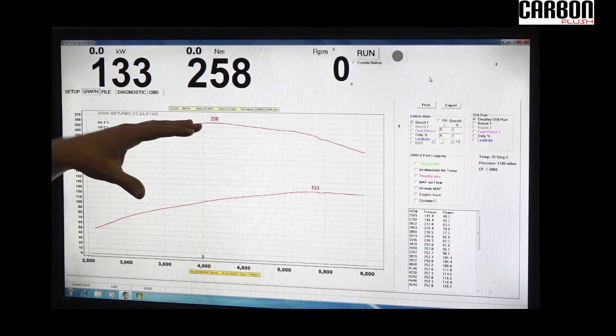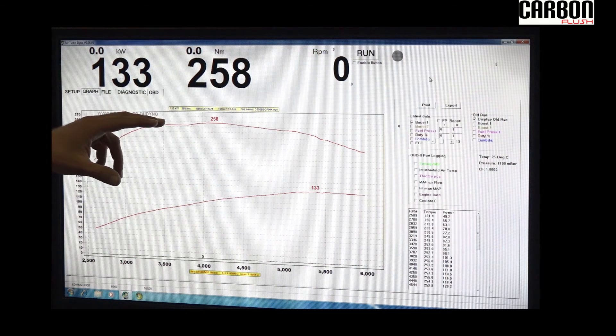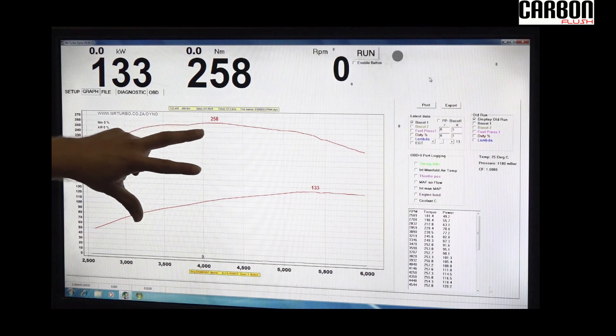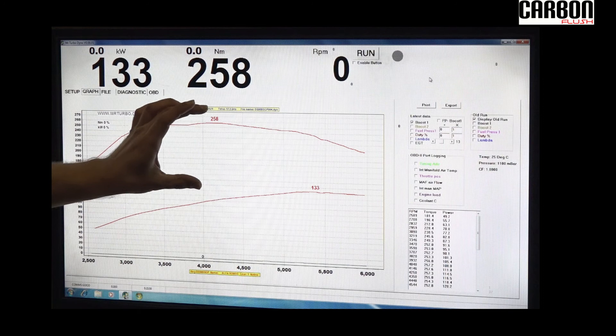You should see here, look at the gains higher up in the RPM range, which is quite substantial over the whole of the rev range from 4000 RPM.